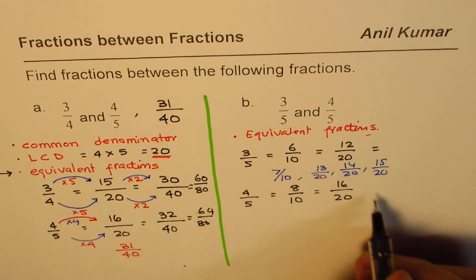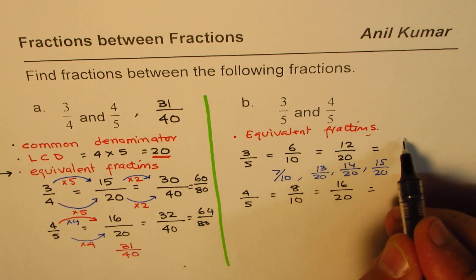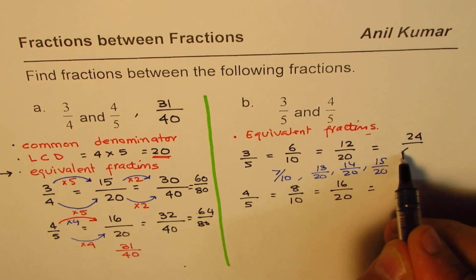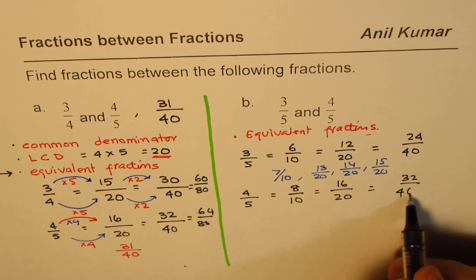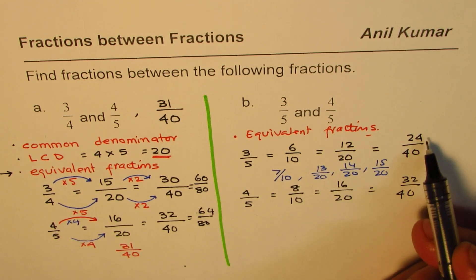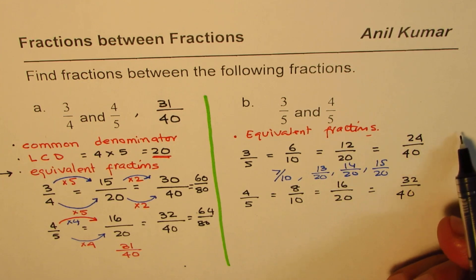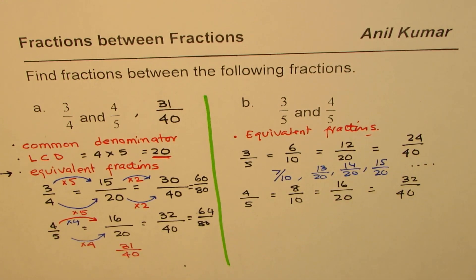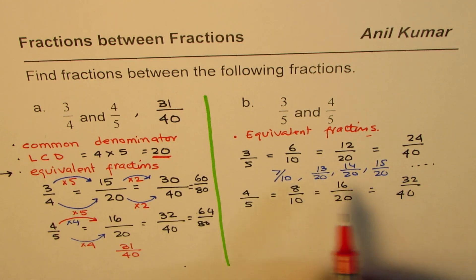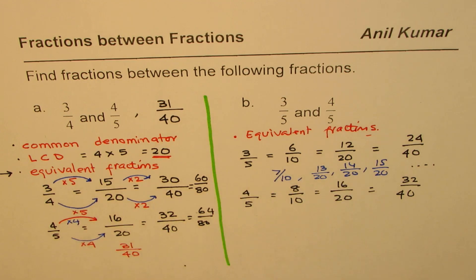We can continue making equivalent fractions. Now double this. So we get 24 over 40 and here 32 over 40. So we get some more: 25 over 40, 26 over 40. Likewise, we have an endless list. Now, you should try writing these fractions between two fractions by taking a few examples.